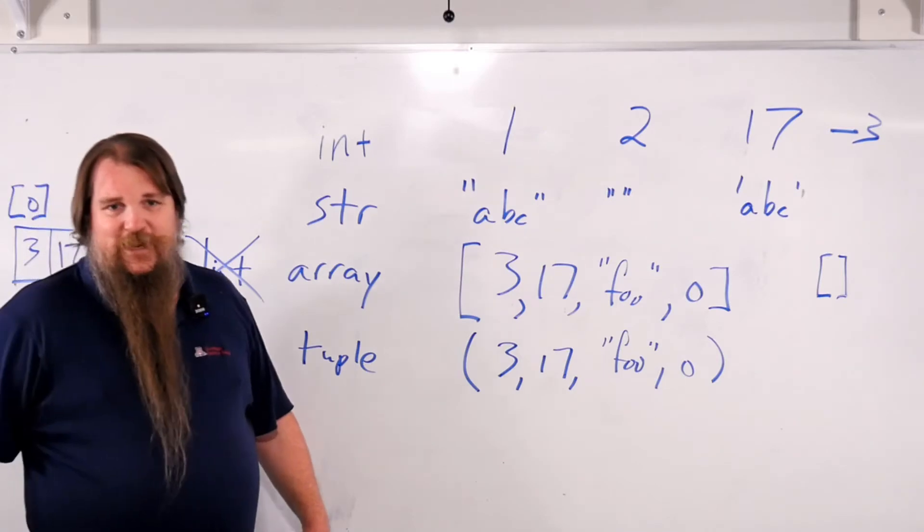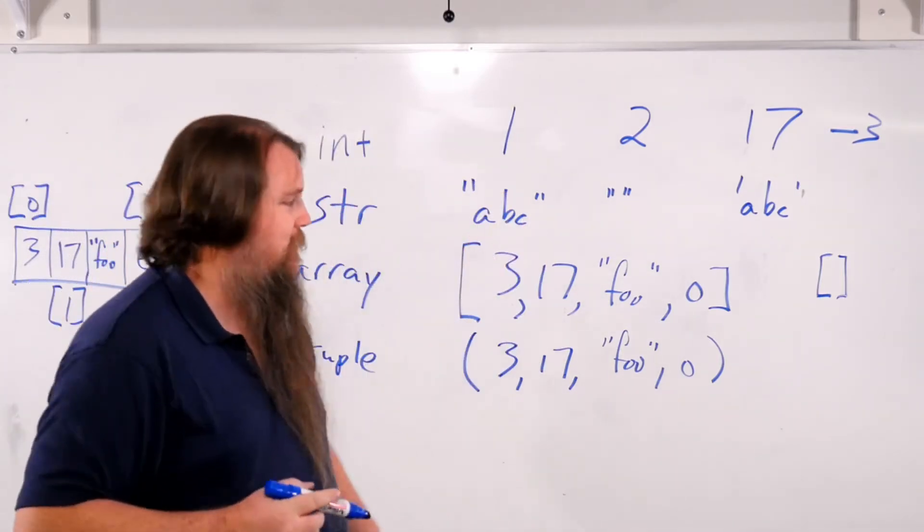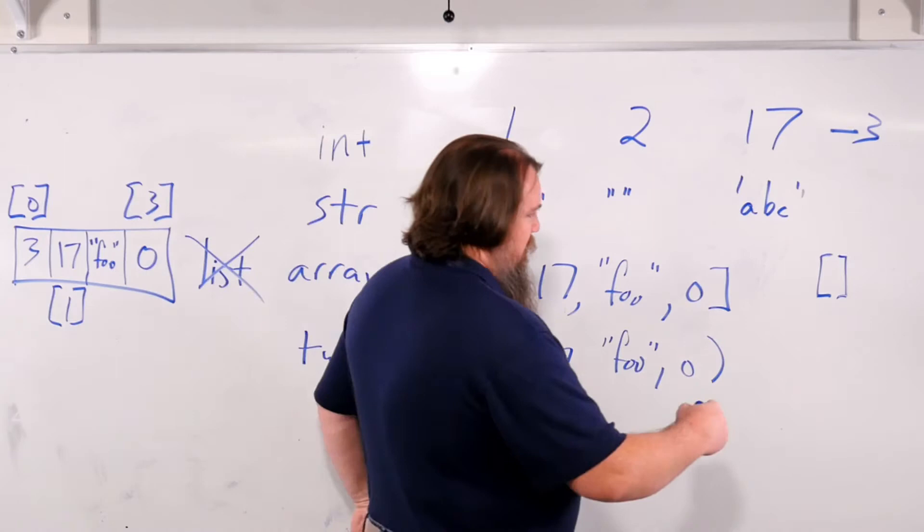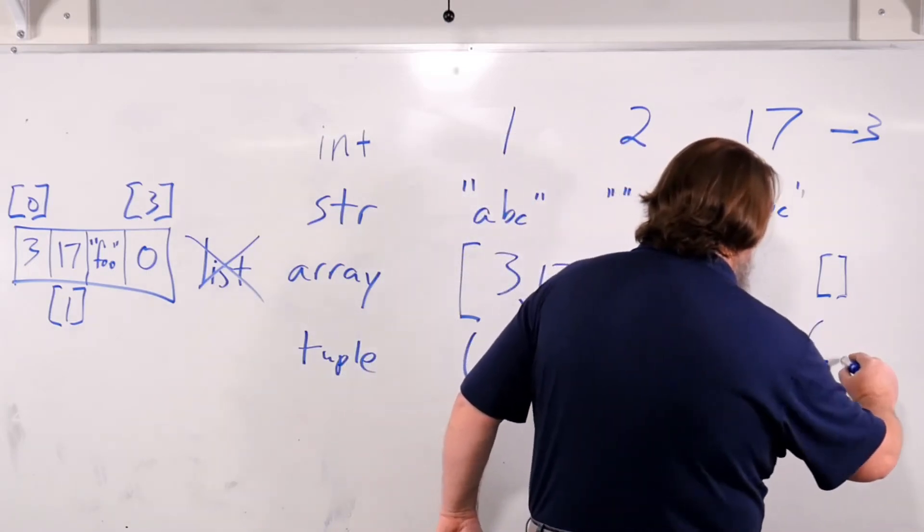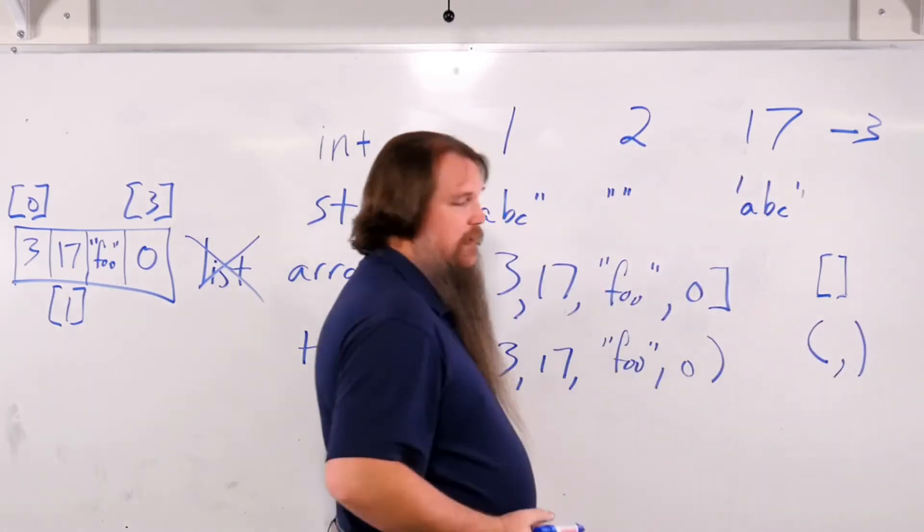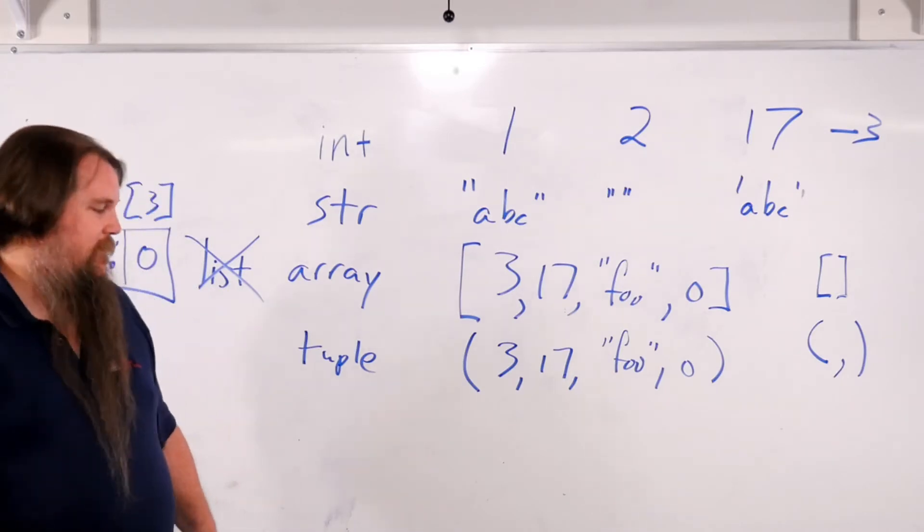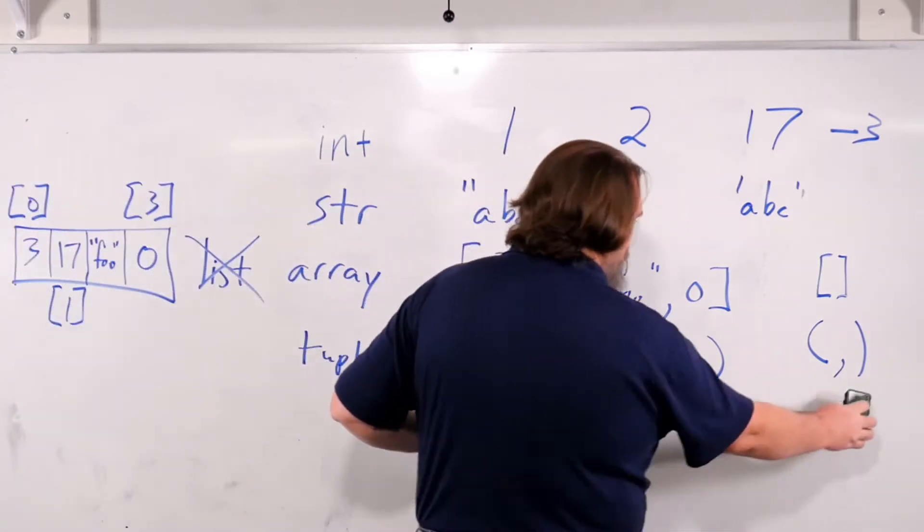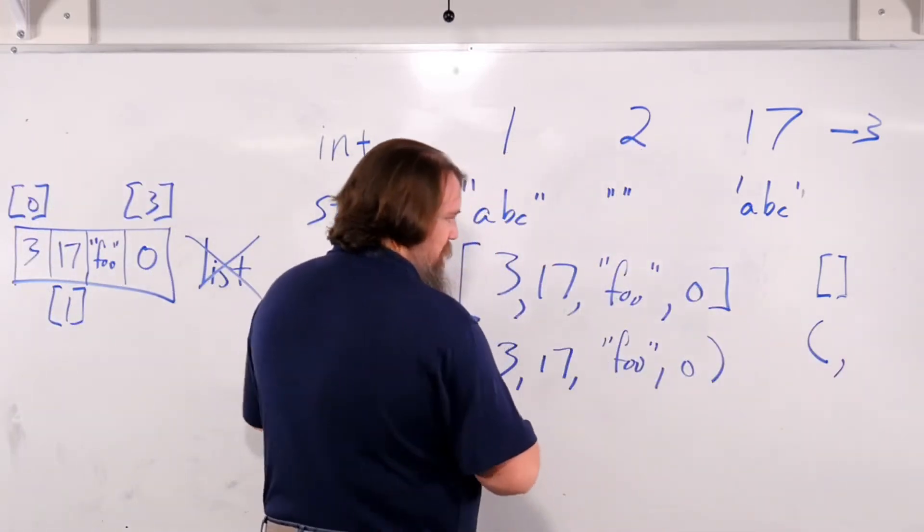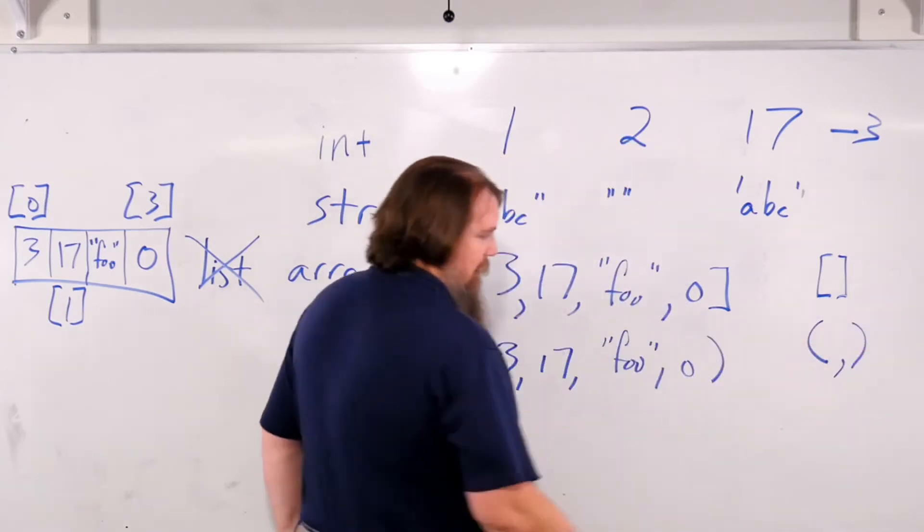If you want to declare an empty tuple, because parentheses are very often used for other things, you can do that with paren comma paren. That is a tuple that has 0 elements.